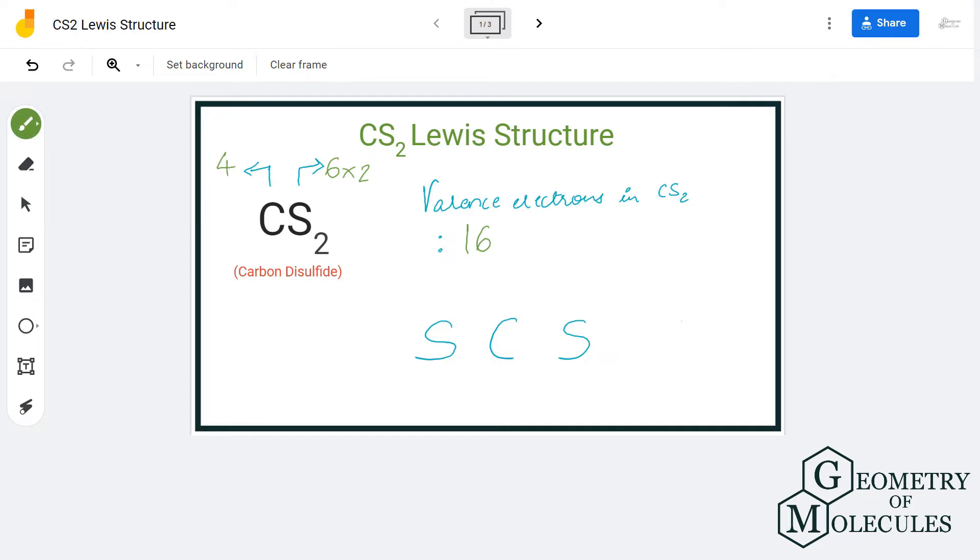Now that you know the number of valence electrons for this molecule, we will place the atoms and the valence electrons around it. Carbon will take the central position because it is less electronegative than the sulfur atom, and both sulfur atoms will go on the outside like this.